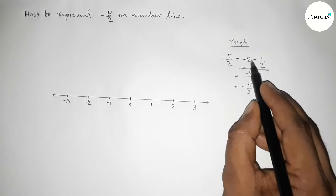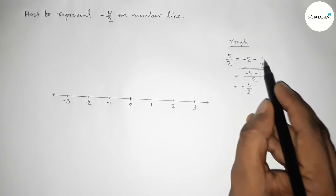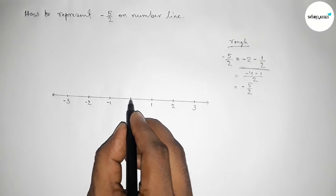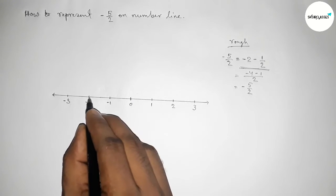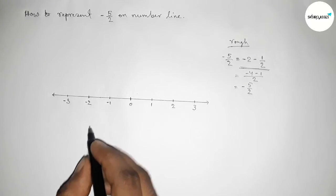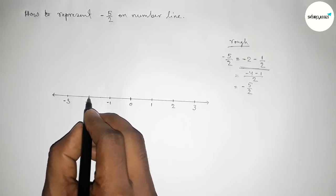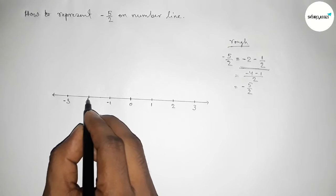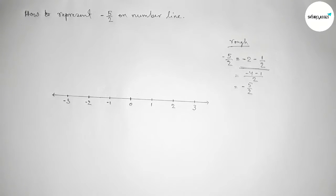So first counting minus two, so between zero, so this is minus two. And now we have to find the middle between minus two to minus three.